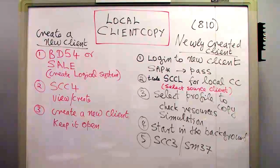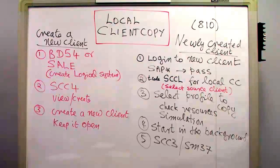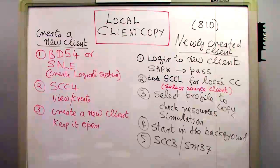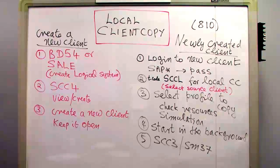Since client copy is very time-consuming, I first do a test run in test mode in the background. In this mode I can check the resources and see a simulation to find out whether the copy will be successful. Once the simulation succeeds, I start the actual client copy in the background. I should have at least two or three background work processes and run it at a time when few users are on the system, because nobody can log into the source client during the copy — any changes made would not be effective — and nobody can log into the target client either.